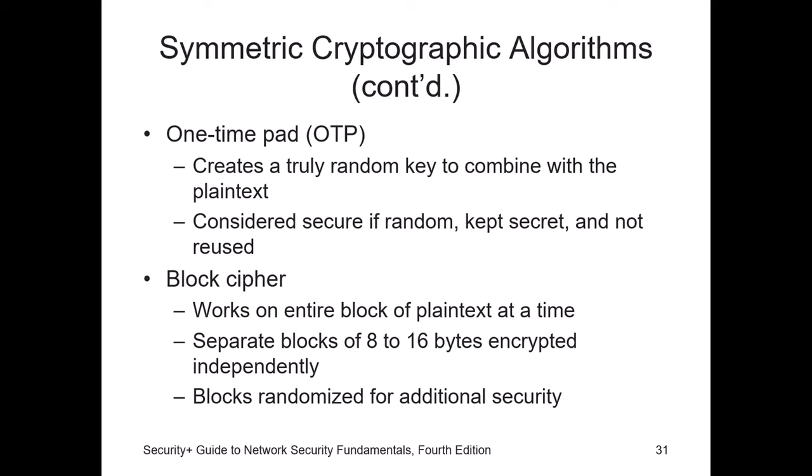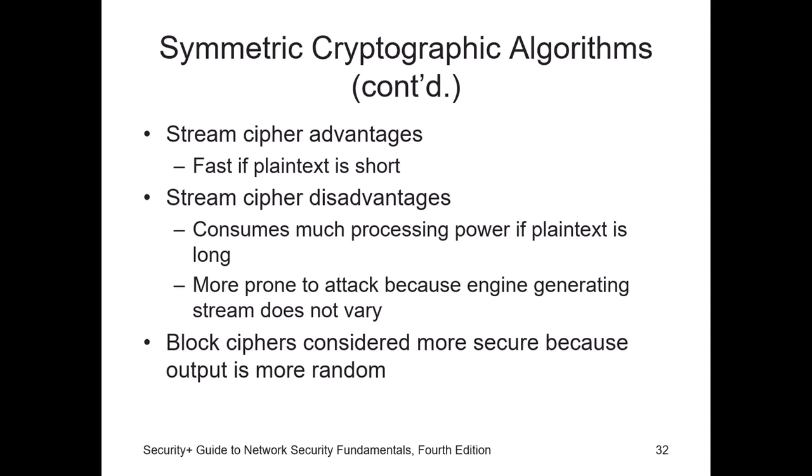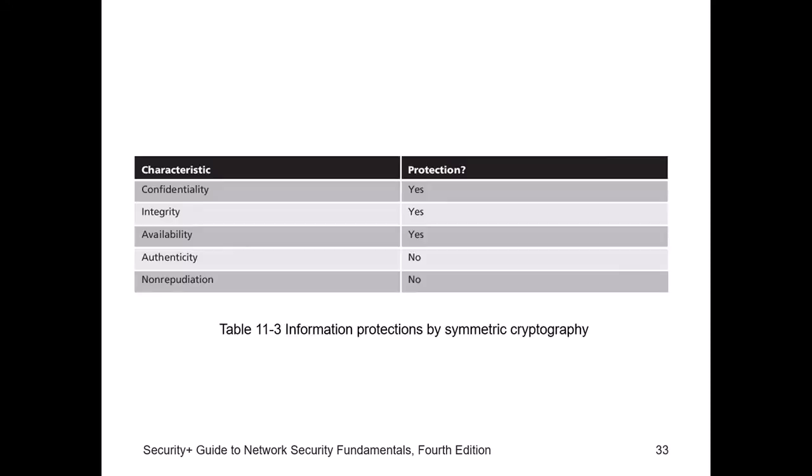Block ciphers, instead of encrypting bit by bit, encrypt data in blocks — either 8, 16, 32, or 64 bits nowadays — to speed things up. With symmetric encryption, you are able to protect the confidentiality, integrity, and availability of the data, but not authenticity and non-repudiation. That's when asymmetric encryption comes in.